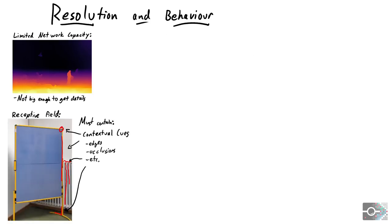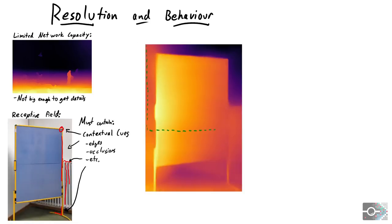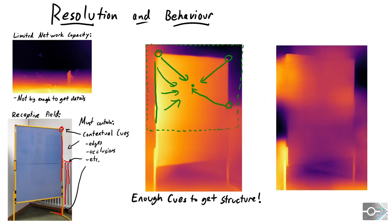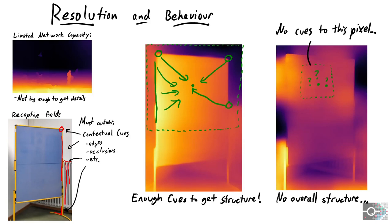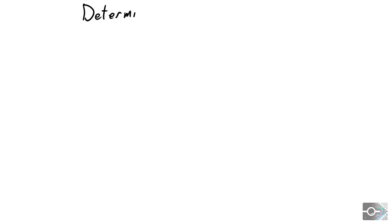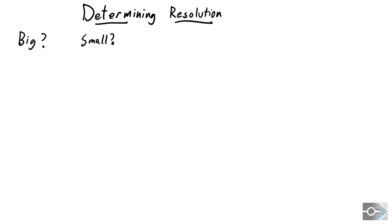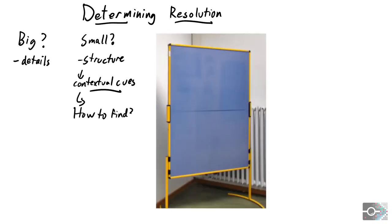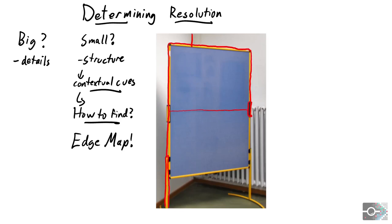At a low resolution, every pixel can see the edges of the board, so the network judges that this is a flat wall. At a high resolution, however, some pixels do not receive any contextual information, resulting in large structural inconsistencies. For any given image, we determine the highest resolution that will result in a consistent structure by making sure that every pixel has contextual information. For this purpose, we need the distribution of contextual cues in the image.